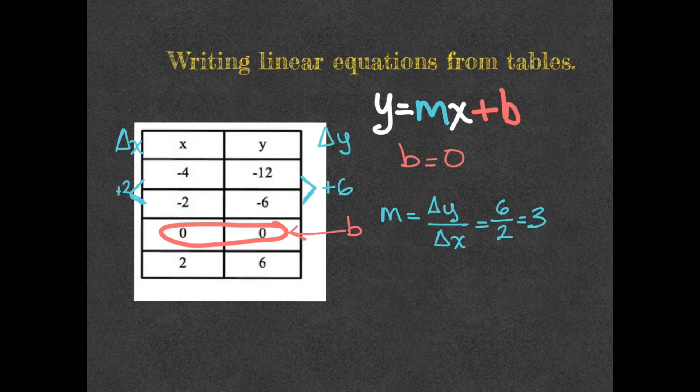Now we know what is my b-value and my m-value. So my slope is 3, my y-intercept is 0. So now I can write my equation.